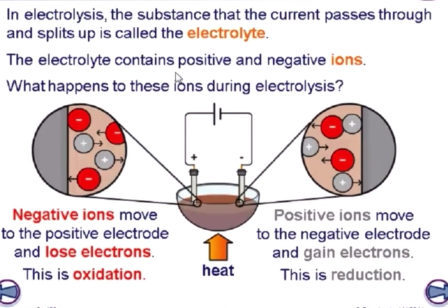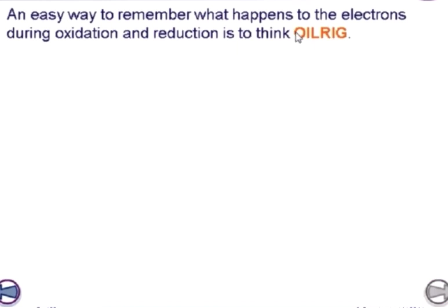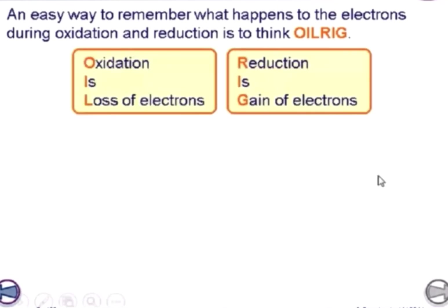During electrolysis, negative ions move towards the positive electrode, where they lose electrons — this is known as oxidation. Positive ions move towards the negative electrode, where they gain electrons — this is known as reduction. Remember the mnemonic OIL RIG: Oxidation Is Loss of electrons, Reduction Is Gain of electrons.